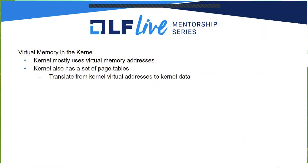I talked mostly about how we get from a virtual address in a process to the underlying physical address in the system. I just want to point out that the kernel itself also uses virtual memory. Most kernel data is actually addressed with virtual memory. There's a set of page tables that translates kernel virtual addresses to physical addresses as well. The kernel itself actually uses virtual memory for most of its data. Obviously it sets up all of this data — there's a bootstrap process — but in general a lot of kernel code really deals with virtual addresses.